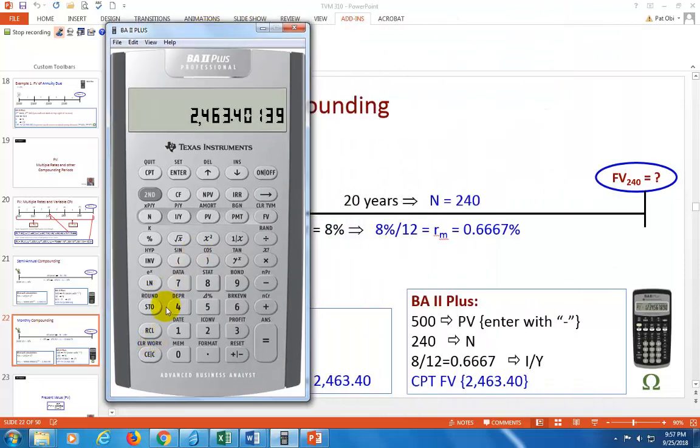Likewise, if you're going to use the built-in function, second clear TVM, second clear work. So when you put in 500 as your present value with a negative, and then 240 is your N, your I/Y, be careful. Go ahead and type 8 divided by 12. When using the built-in functions, do not type it in as decimal. Type it in as a regular number and divided by 12. You get this and then you hit I over Y. That's it. And compute future value. And this is how you get the correct exact results.